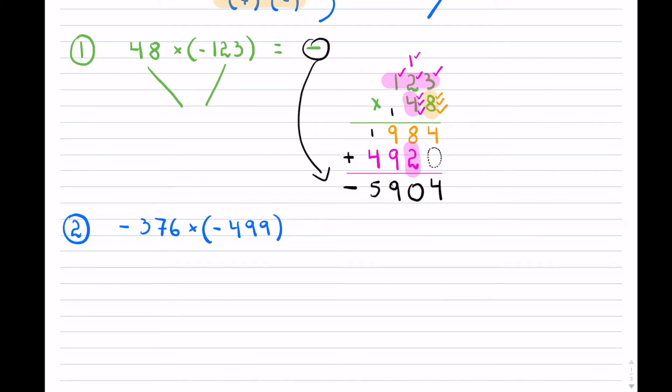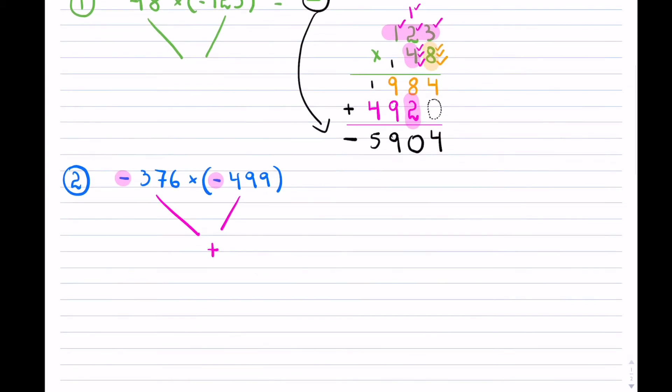First thing I notice, a negative times a negative. So I know my answer is going to be positive. And now, I have the same amount of digits. So it doesn't matter which one goes on top, which one goes at the bottom. So 499, let's say, 376. You could reverse them. You should get the same answer as long as you do it correctly.